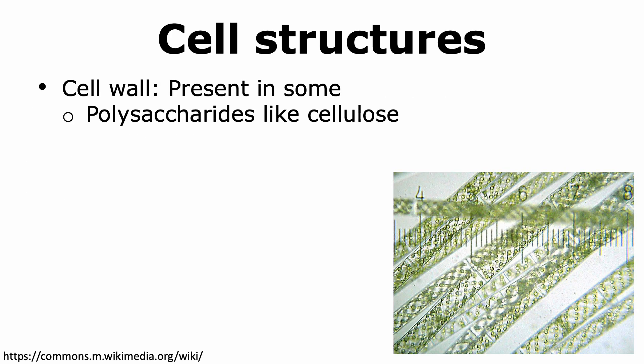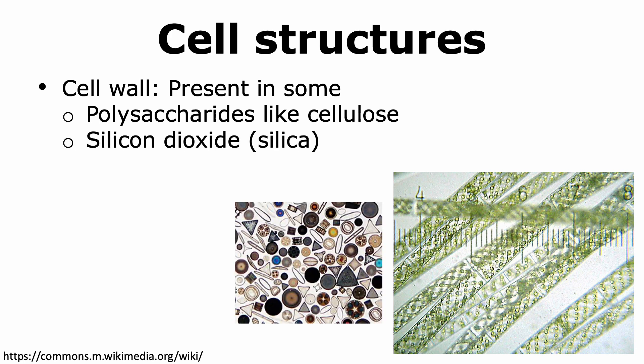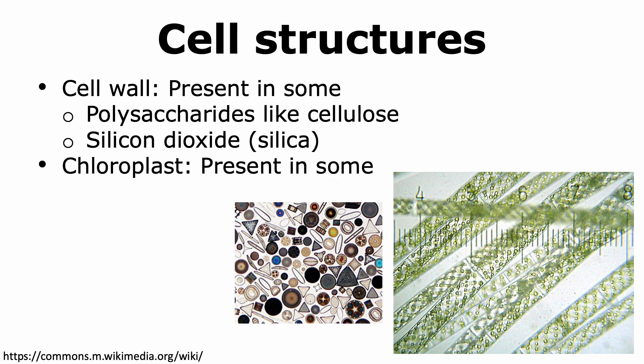Some protists have a cell wall, and this cell wall can be made up of polysaccharides like cellulose, which is seen in different types of algae. Other protists, like diatoms, can have a cell wall that is made up of silicon dioxide, or silica. Some protists are autotrophs and have chloroplasts.